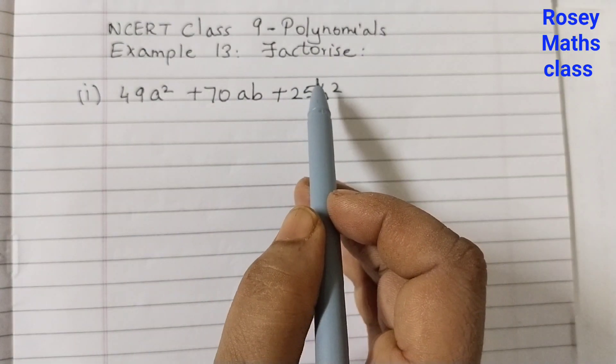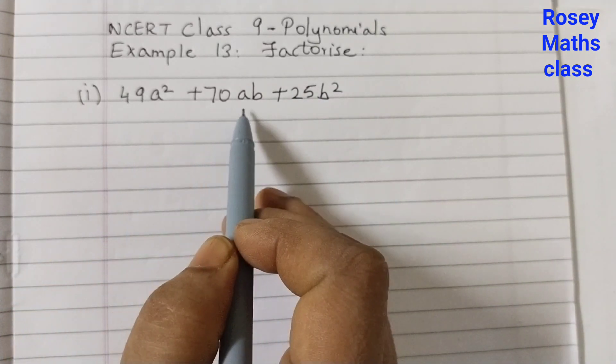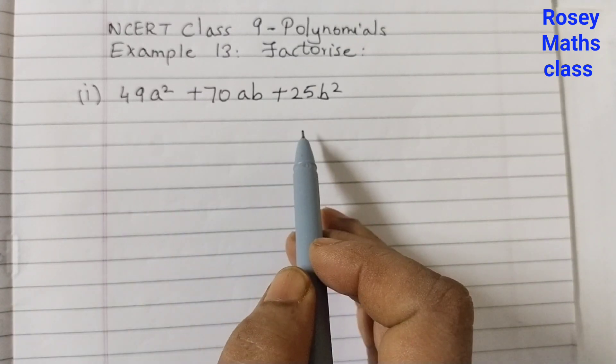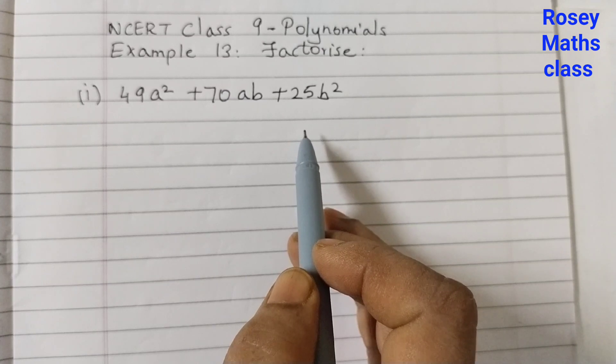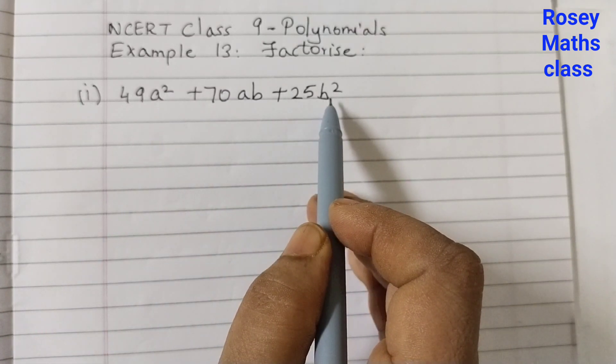Factorize means to find out the factors. 49a squared plus 70ab plus 25b squared. Now to find out the factors for this one, we need to use the identity because if you see here there is a square here and here also a square.